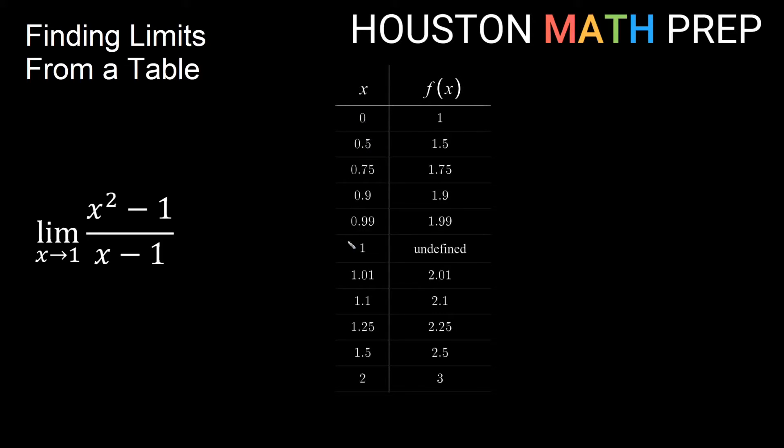So thinking about approaching from the left side of 1, from 0 and then half and then 3 quarters and then 0.9, 0.99, it looks like we're getting closer and closer to, I would guess, a value of 2. You can see 1.9, 1.99. It's a pretty good bet that we're getting close to y equals 2.